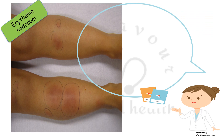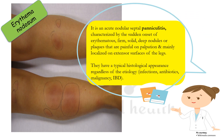Erythema nodosum is an acute nodular septal panniculitis — panniculitis being inflammation of the underlying fat. It is characterized by sudden onset of erythematous, firm, solid, deep nodules or plaques that are painful on palpation and mainly localized on the extensor surfaces of the legs. They have a typical histologic appearance regardless of etiology, and common etiologies include infections, antibiotics, malignancy, and inflammatory bowel disease.